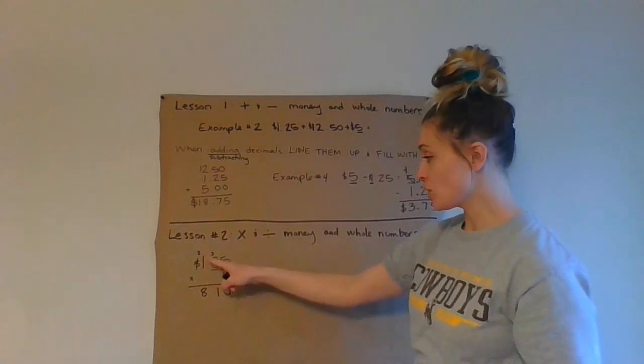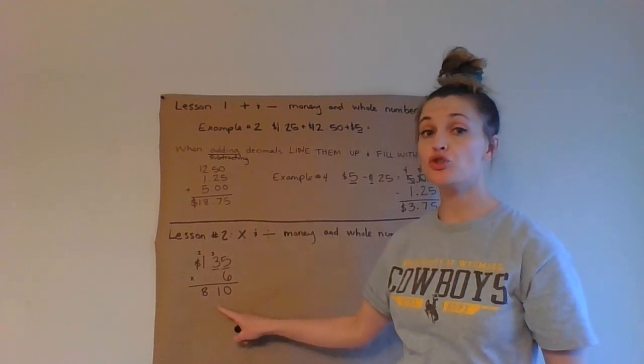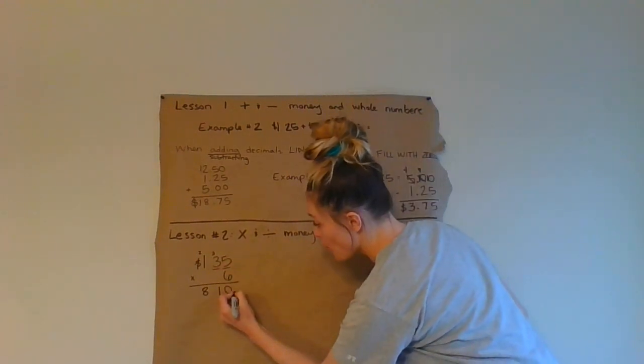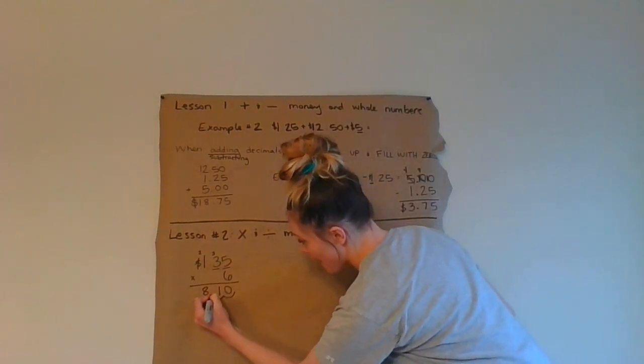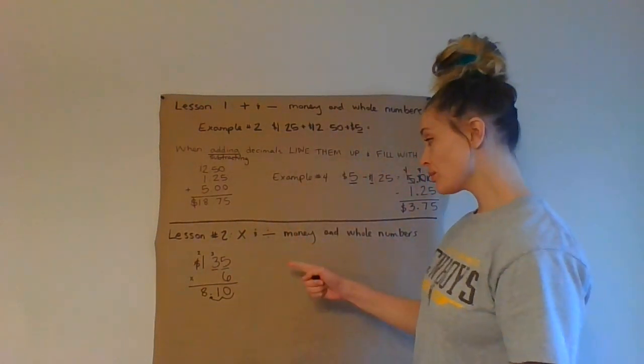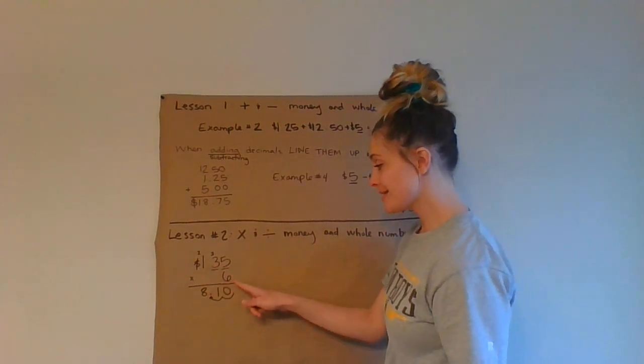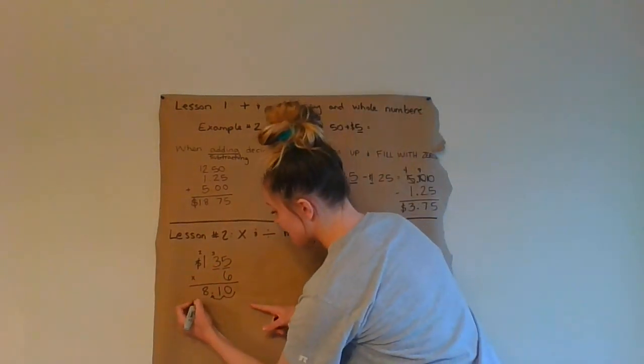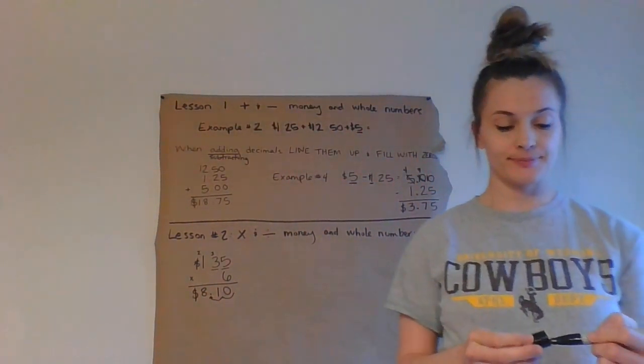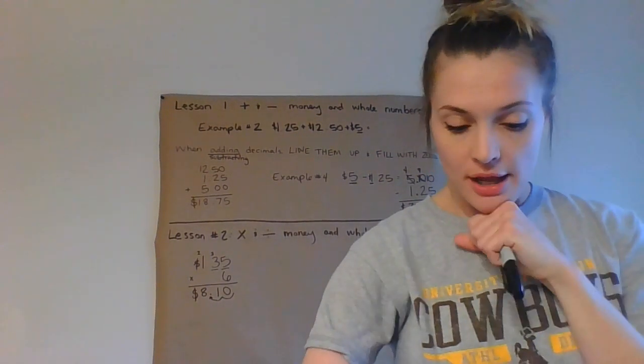Now, I need to count the number of place values that are behind the zero. So, I go to my number with my decimal in it and there are one, two places after it. Two places. Now, I'm going to go to the end of my answer and I'm going to go in two places. So, at the end of my number I go one, two. That is where my decimal goes. So, one dollar and thirty-five cents times six is eight dollars and ten cents. That's how you multiply money and whole numbers together.